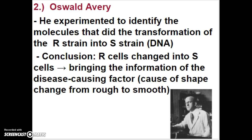Oswald Avery was next in line. He experimented to see what was actually causing this transformation process. He concluded that the rough, lumpy, bumpy cells changed to smooth, no-bump cells, bringing the pneumonia information with them — an actual shape change. So it was a transformation not just of information, but of cell shape, going from rough to smooth, and that smooth form of the pneumonia virus would cause illness. However, this wasn't quite enough to get everybody on board the nucleic acid wagon, as some scientists still believed proteins held the genetic information.